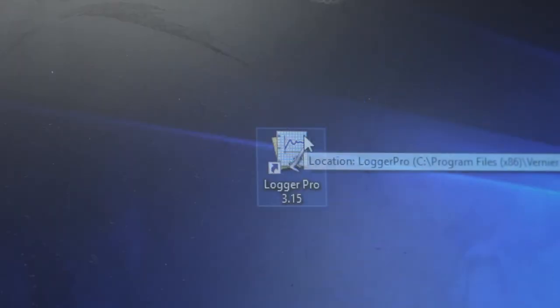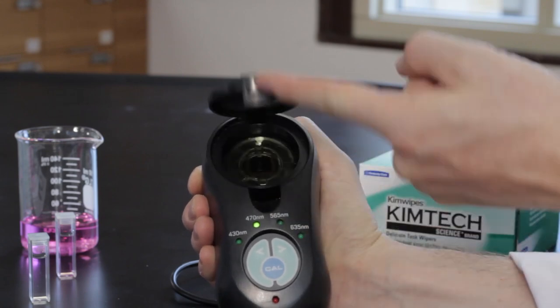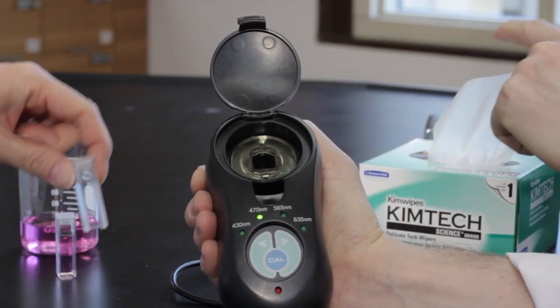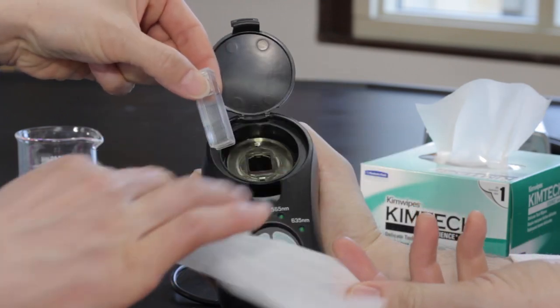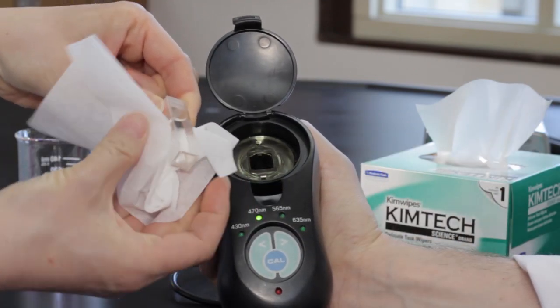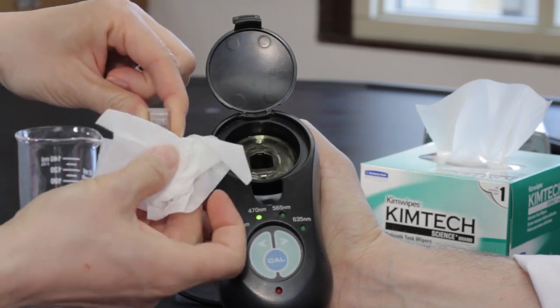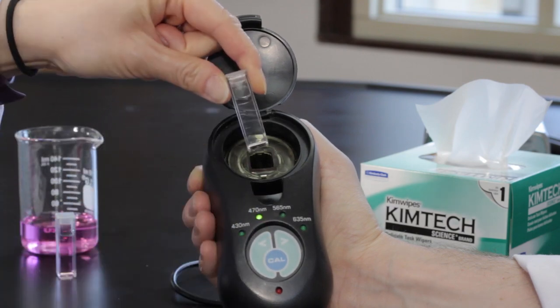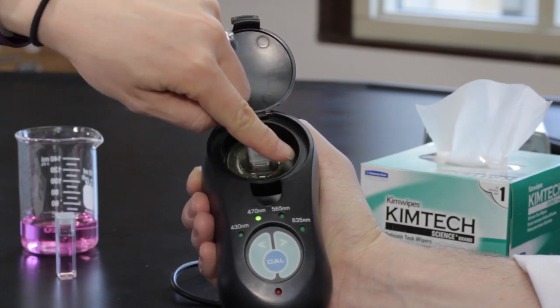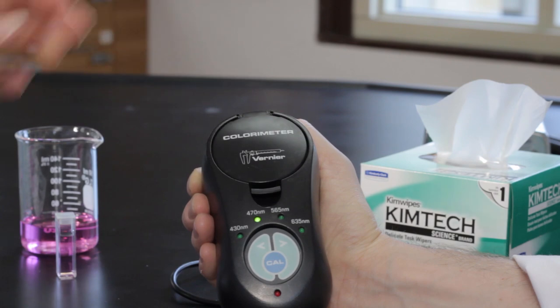Open the LoggerPro program and the appropriate file for the experiment. The colorimeter must now be calibrated. Wipe the cuvette containing the reference solution, which was distilled water, with Kimwipe and place it in the cell wall of the colorimeter. The cuvette must be clean and dry. Make sure to position the cuvette so that one of its clear faces is directed toward the white reference mark. Close the cell wall.